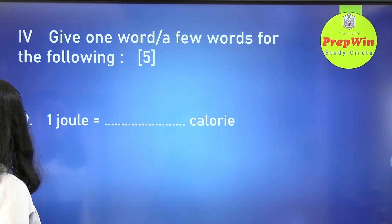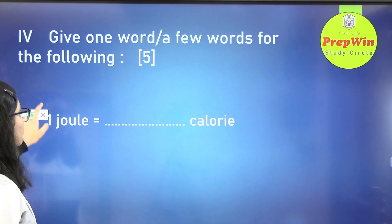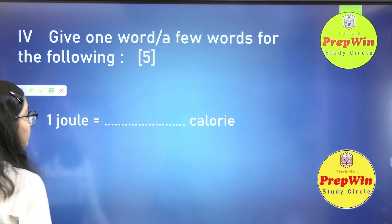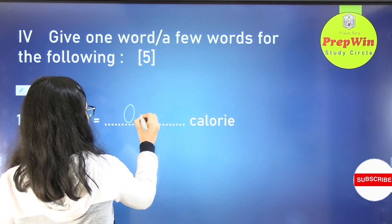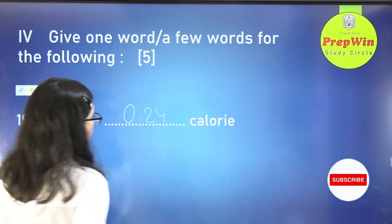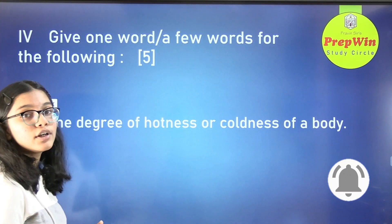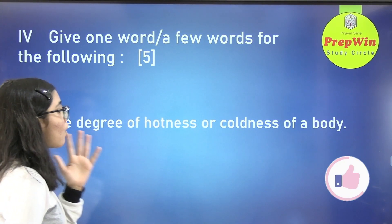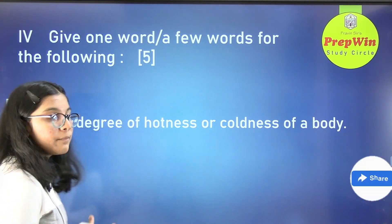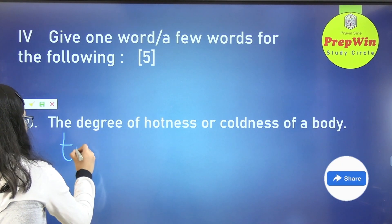The 19th question: 1 Joule is equal to dash calorie. The answer is 0.24 calories. The 20th question: the degree of hotness or coldness of a body is known as temperature.